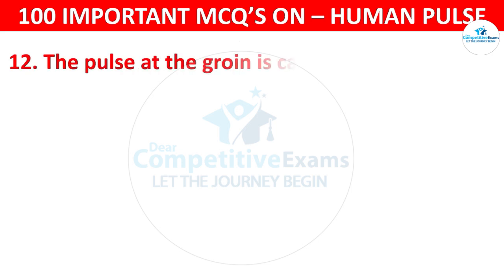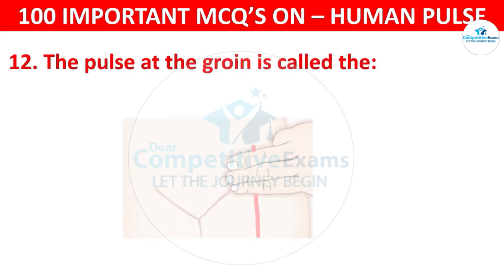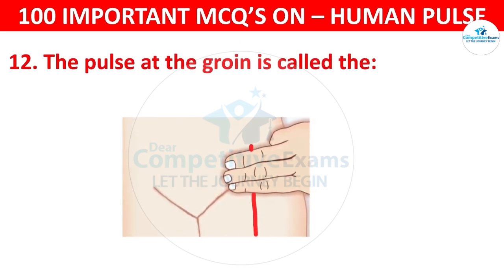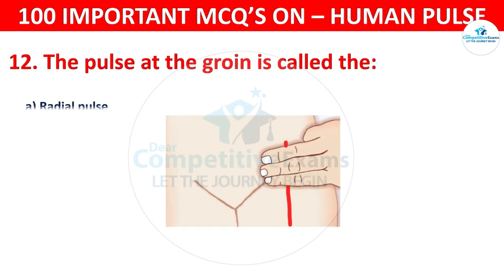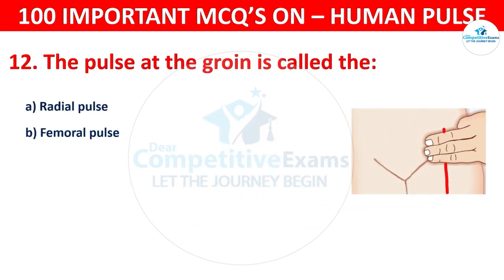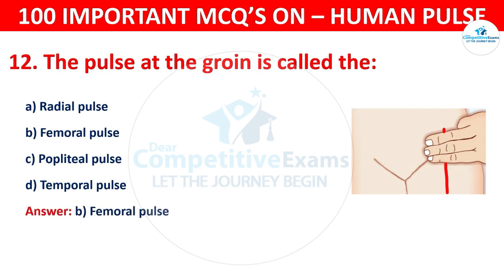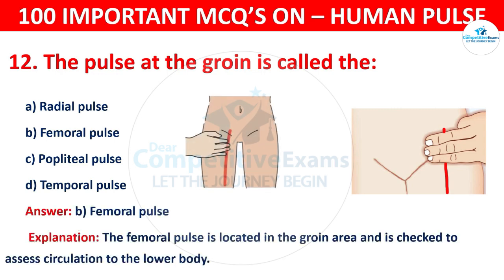Question number 12: The pulse at the groin is called — options are: Radial pulse, Femoral pulse, Popliteal pulse, or Temporal pulse. The correct answer is B, that is femoral pulse. The femoral pulse is located in the groin area and is checked to assess circulation to the lower body.